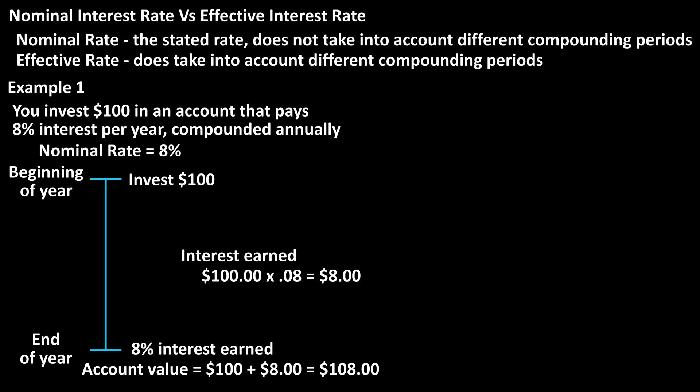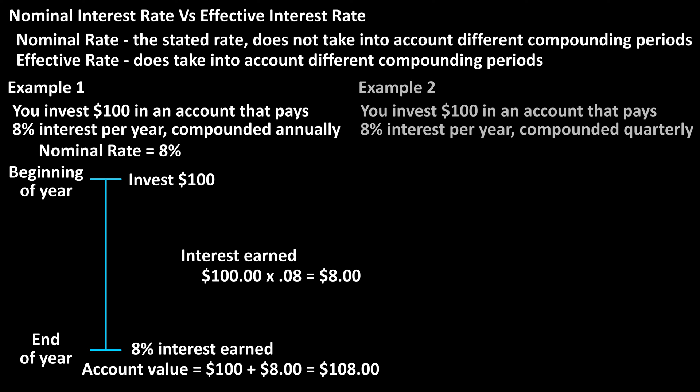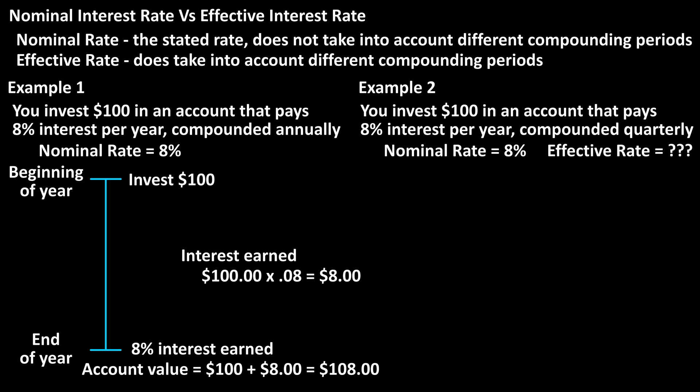Now let's change the example up a little. This time you invest $100 in an account that pays an interest rate of 8% per year compounded quarterly, so 4 times per year. Again, the stated or nominal rate is 8%, but the effective rate is actually higher than 8%.